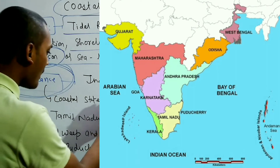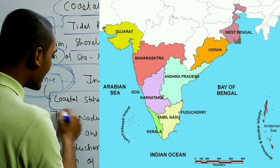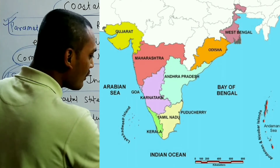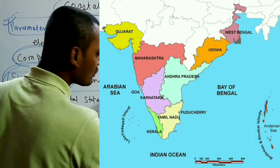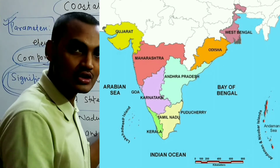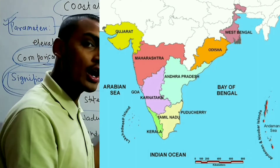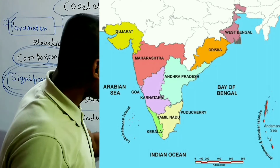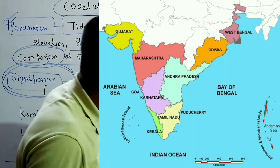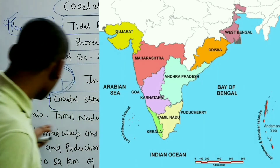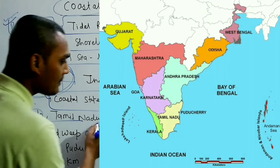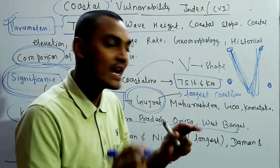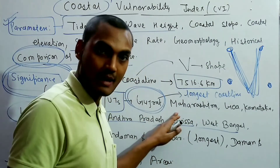In terms of coastal states, Gujarat has the largest coastline among all states. The other coastal states are Maharashtra, Goa, Karnataka, Kerala, Tamil Nadu, Andhra Pradesh, Odisha, and West Bengal.